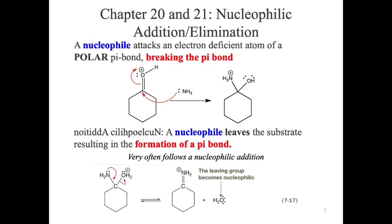In chapters 20 and 21, we're doing a nucleophilic addition — which is what we did in 18 and 19 — except we're also going to follow it with a nucleophile elimination, which we've technically already seen. When we converted the ketone into the amine, we technically did a nucleophile addition and a nucleophile elimination. The textbook didn't classify it that way, and I'm not entirely sure why.